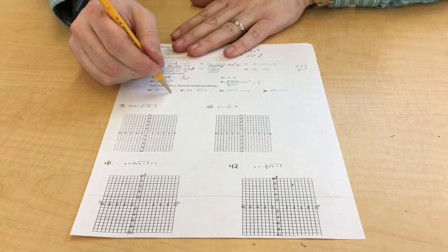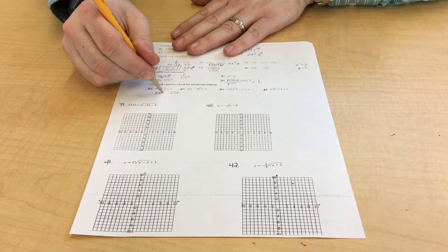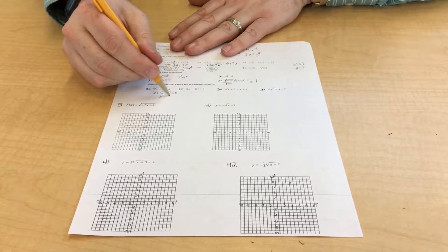On this one, this is 216 because we're cubing it. And that's x plus 5 equals 216. So x is 211.